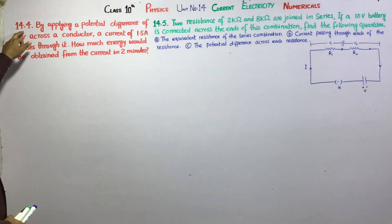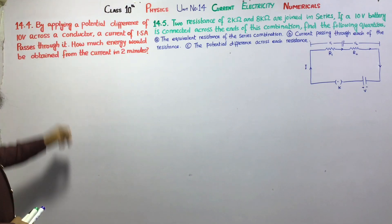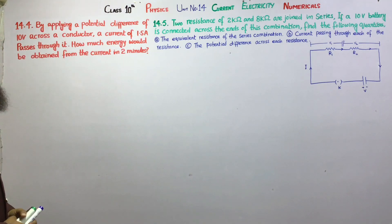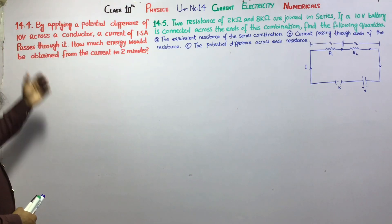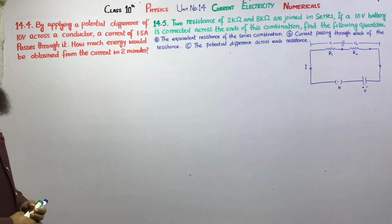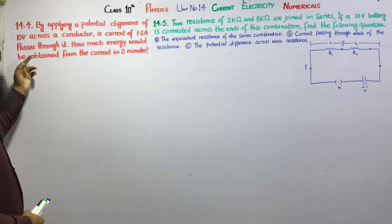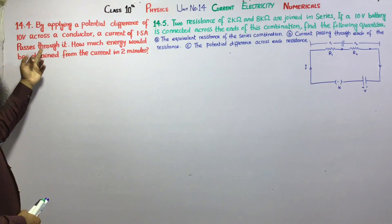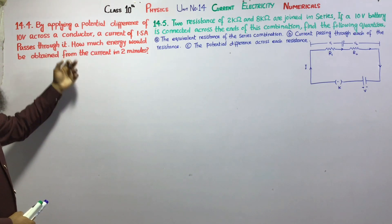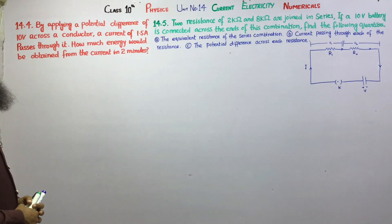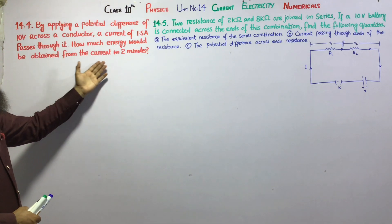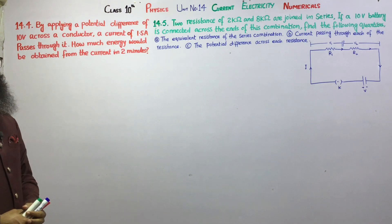Number 14.4: By applying a potential difference of 10V across a conductor, a current of 1.5A passes through it. How much energy would be obtained from the current in 2 minutes?